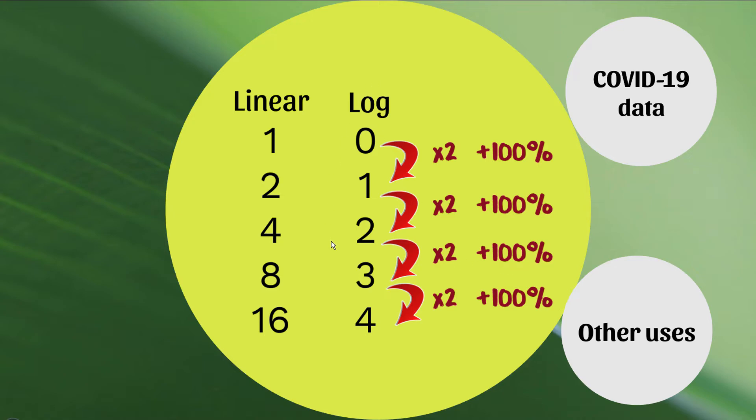So we now have a scale which has a consistent proportionate increase all the way along its length. And you can actually show that going from a log value of 2.5 to 3.5 is also an increase of 100%. So this really is consistent throughout the scale.